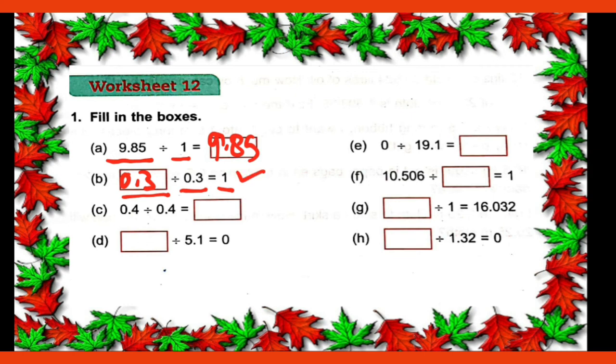Now you are seeing here in C part 0.4 divided by 0.4. So dividend and divisor same. So answer will be 1. Now you are seeing here you have to find the dividend. Divisor 5.1 and quotient 0. This means your dividend is also what? 0. Because quotient can be 0 only when your dividend is 0.